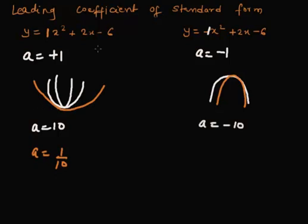Similarly, in the second case, if instead of minus 10, if A is minus 1 by 10, the graph is broader and it exists like this.